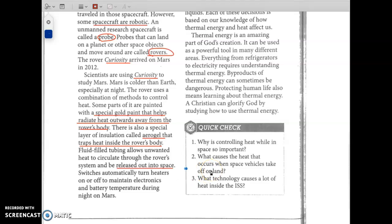So what is the rover that is used to study the planet Mars? Curiosity, good. And what methods do scientists and engineers use to manage heat inside this rover? Yep, special gold paint, aerogel, fluid-filled tubing allows unwanted heat to get out into the space.